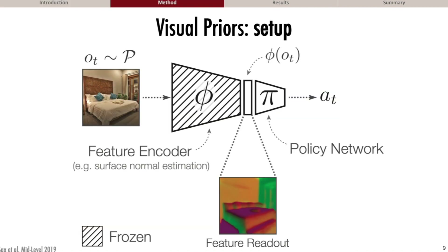We plug this into the RL loop in the simplest way possible, where instead of feeding an image to the policy, we instead extract a statistic of the image by first running it through the feature encoder and then providing that statistic to the policy. During training, we update only the policy network and not the feature extractor.